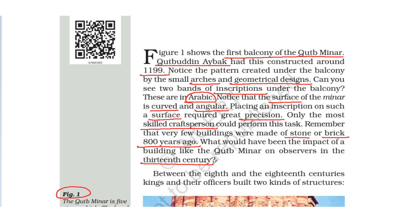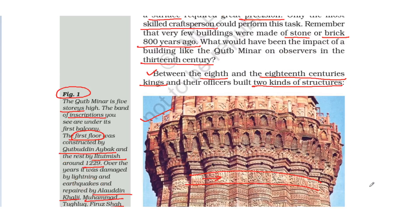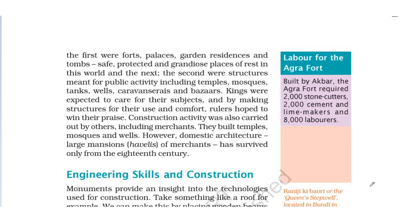Between the 8th and 18th centuries, kings and their officers built two kinds of structures. The kings of the 8th century and 18th century built two types of structures. The first were forts, palaces, gardens, residences and tombs.